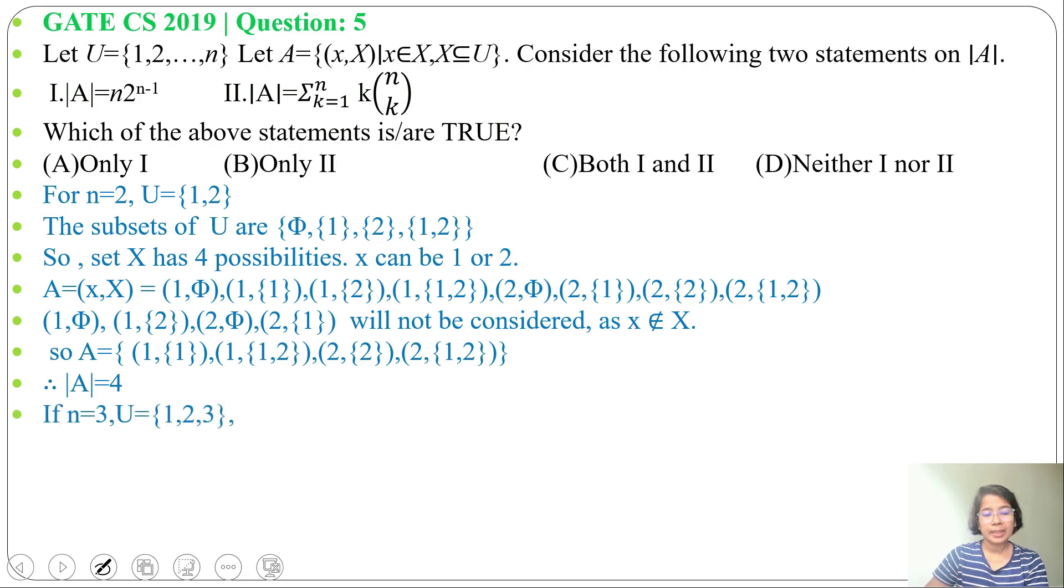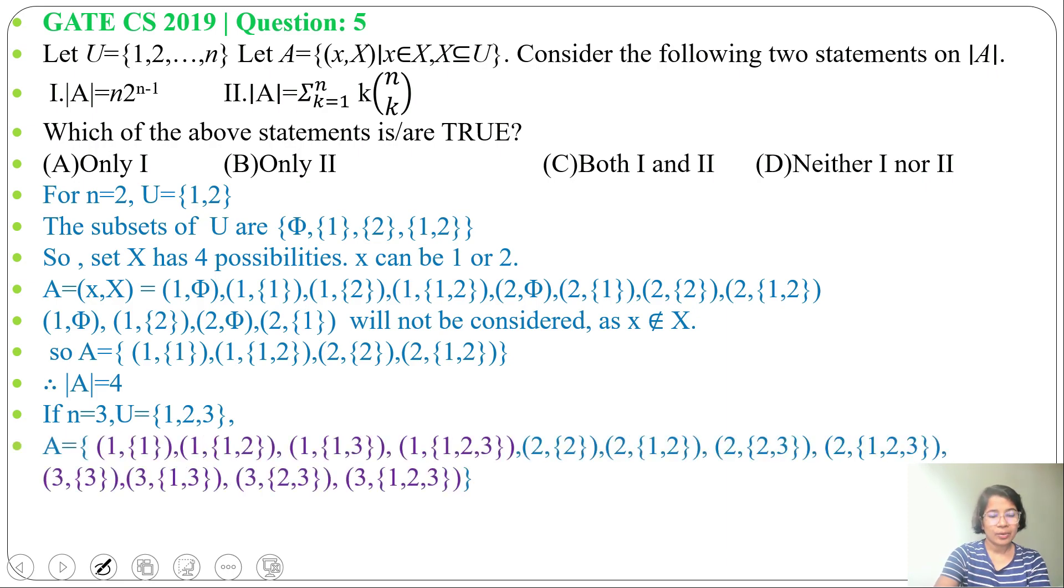When n will be 3, U will contain 1, 2, 3. Then what will A contain? A will contain (1, {1}), (1, {1,2}), (1, {1,3}), (1, {1,2,3}). Here you just mark the first element belongs to the second. Then (2, {2}), (2, {1,2}), (2, {2,3}), (2, {1,2,3}). Then (3, {3}), (3, {1,3}), (3, {2,3}), (3, {1,2,3}). So A cardinality equals 12.